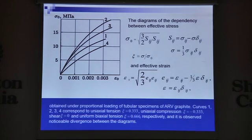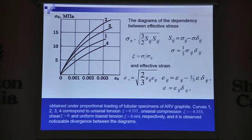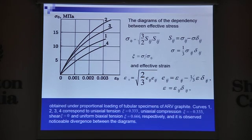I can show some results of experimental studies to demonstrate these features. Here you can see the effect of the stress-strain curves obtained for structural graphite under proportional loading. Curve 1 corresponds to uniaxial tension, curve 2 to uniaxial compression, curve 3 to pure shear, and curve 4 to uniform biaxial tension.